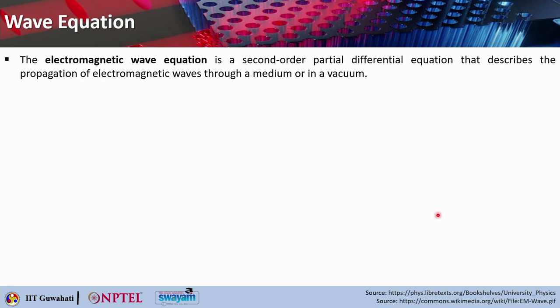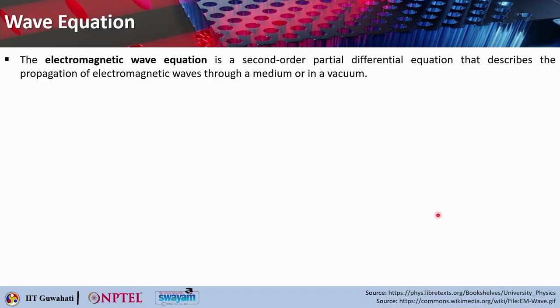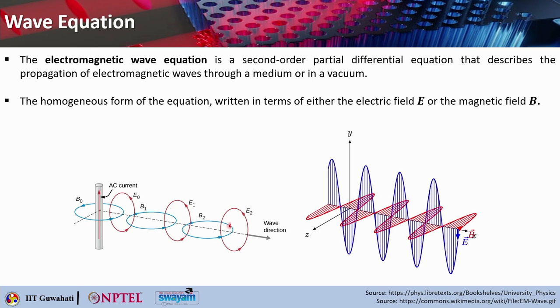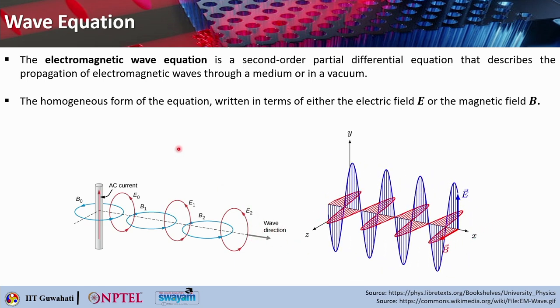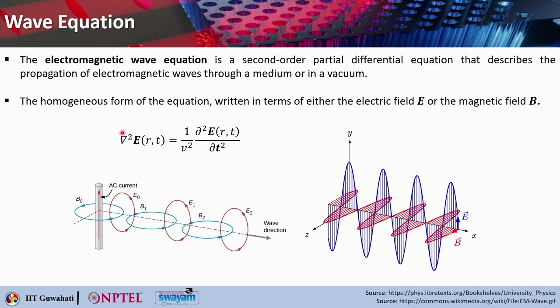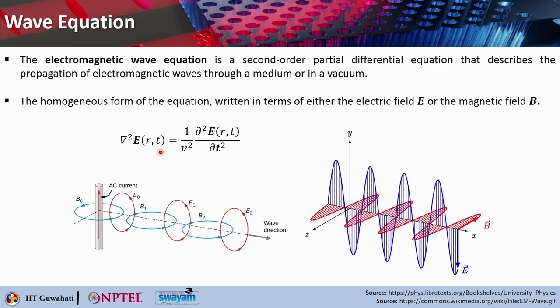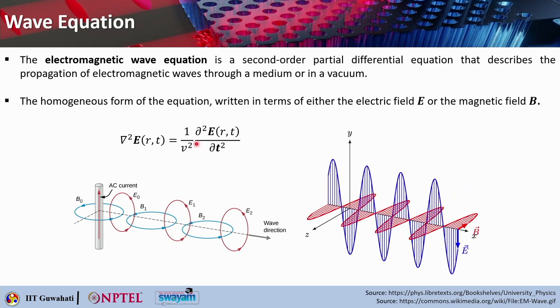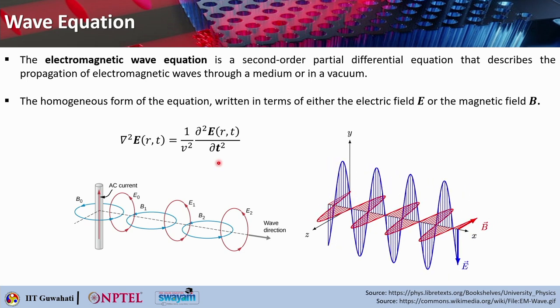Let us determine how electric and magnetic field propagation through a particular region can be described in the form of a wave equation. The electromagnetic wave equation is a second-order partial differential equation that describes the propagation of an electromagnetic wave through a particular medium or in vacuum. The electric and magnetic fields are coupled and oscillating in their own planes with a wave propagation direction. The homogeneous form written in terms of either E or H is called the wave equation: the Laplacian of the electric field vector equals (1/v²) times the second-order partial derivative with respect to time.